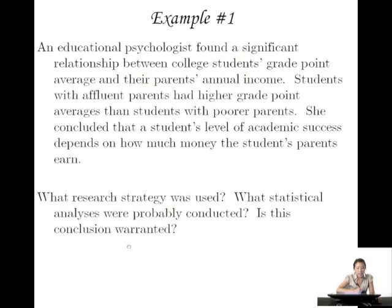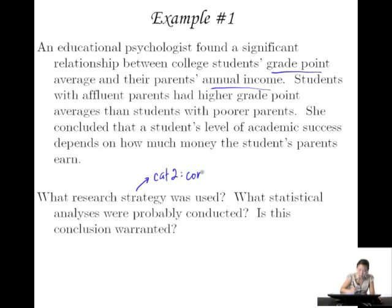Let's move on to some examples. Example one: an educational psychologist found a significant relationship between college students' grade point average and their parents' annual income. Students with affluent parents had higher grade point averages than students with poorer parents. She concluded that a student's level of academic success depends on how much money the student's parents earn. What research strategy was used? We know that grade point average is continuous and annual income is continuous, so this must be Category 2 — correlational.